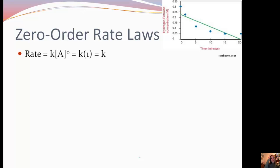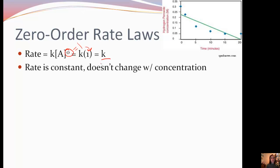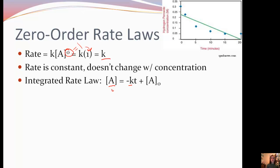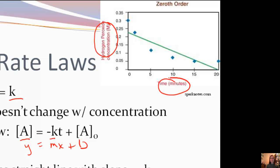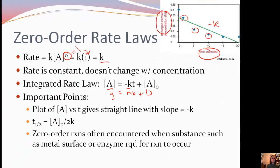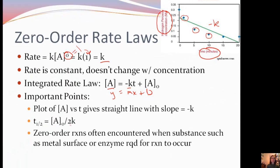Let's look at our last rate law: zero-order. In a zero-order rate law, we have k times A to the zero power. Anything to the zero power equals 1, so it's actually k times 1, which ends up being k. This means the rate is constant — it's not going to change with concentration. The integrated rate law is: [A] = −kt + [A]₀, following y = mx + b. If we plot the concentration of A versus time, we get a negative slope. The half-life for zero order is [A]₀/(2k). Zero-order reactions are often encountered when a substance such as a metal surface or enzyme is required for the reaction to occur.